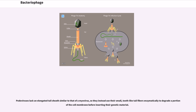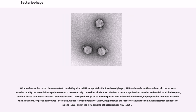Within minutes, bacterial ribosomes start translating viral mRNA into protein. For RNA-based phages, RNA replicase is synthesized early in the process. Proteins modify the bacterial RNA polymerase so it preferentially transcribes viral mRNA. The host's normal synthesis of proteins and nucleic acids is disrupted, and it is forced to manufacture viral products instead. Walter Fiers at the University of Ghent, Belgium, was the first to establish the complete nucleotide sequence of a phage gene (1972) and of the viral genome of bacteriophage MS2 (1976).